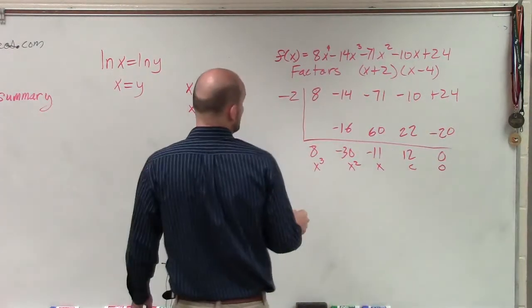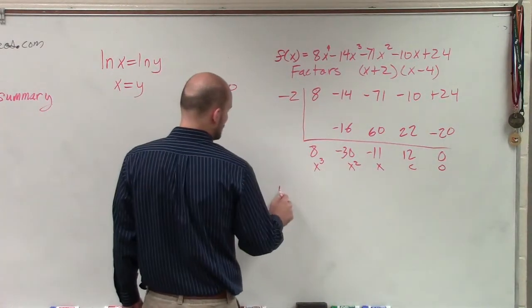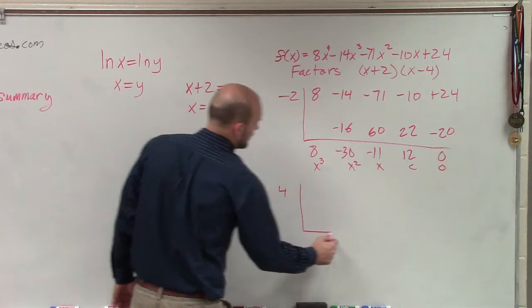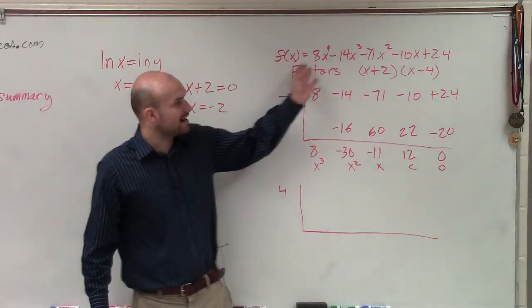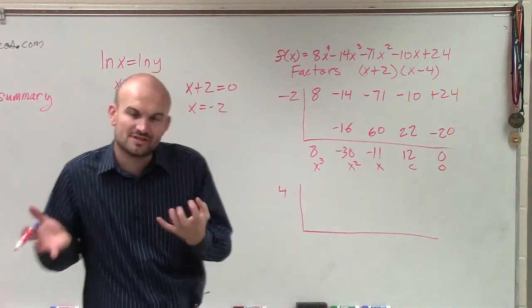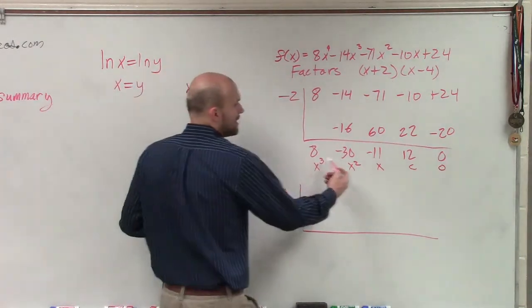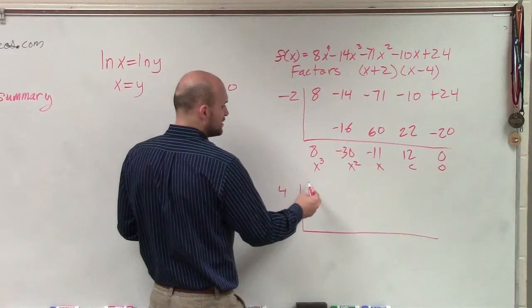So now I can take my other factor, which would be a positive 4, and I can apply synthetic division again to it. But rather than using my original problem, I want to remember our whole goal is to factor this all the way down. So therefore, I'm going to take the coefficients of my quotient.